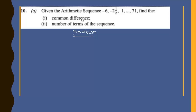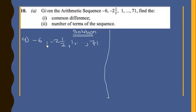Question 10a: we're given the arithmetic sequence negative six, negative two and a half, one, and the last term of the sequence is 71. We are asked to find the common difference d. The common difference d is equal to the subsequent term minus the previous term.